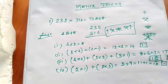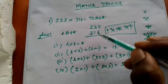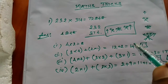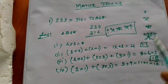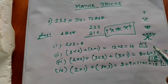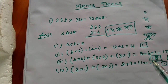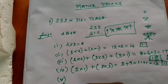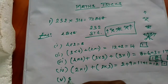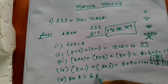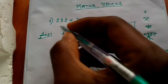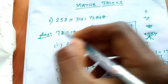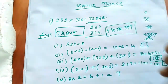Now for the final step: 3 into 2 equals 6, plus carry 1 equals 7. So the answer is 728484. The answer is confirmed — very simple to apply.